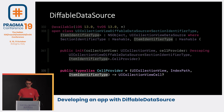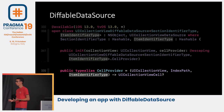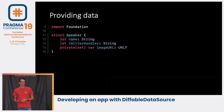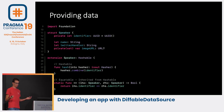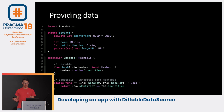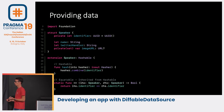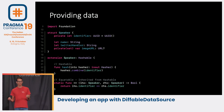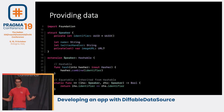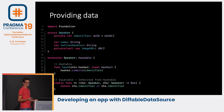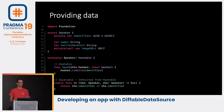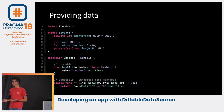Let's start by updating our Speaker view model to conform to Hashable. For Hashable, we want to make our speaker unique, so we'll specify a unique identifier. We need this because if your speaker is not unique, the data source cannot figure out how many items it has, and you'll get random behavior. To conform to Hashable we specify which property makes the view model unique — for now just the identifier. And because Hashable also conforms to Equatable, we specify the equatable property using the identifier to check if two speakers are the same.